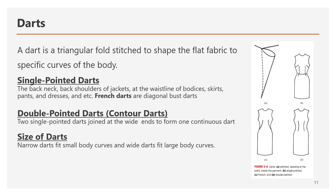A dart is a key shaping method in garment design — a triangular fold stitched to shape flat fabric to the specific curves of the body. Looking at the purple 2D pattern, you can see the dart point, dart legs, and the fold. Once you fold along that line and stitch the dart legs together underneath, you get the curves of the body shape, creating a dimensional, 3D shape.